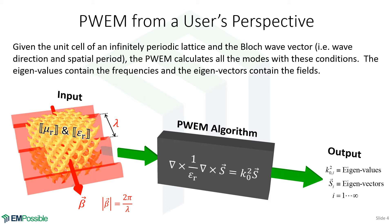The outputs are eigenvalues, which are the frequencies of the modes, and eigenvectors, which are pictures of the modes. Eigenvalue problems always have an infinite number of solutions, but since we've truncated our Fourier expansions to some number of spatial harmonics, there's a limit — if we have 101 spatial harmonics we can only calculate 101 modes. We calculate eigenvalues for each value of beta, and when we line them up they form photonic bands.